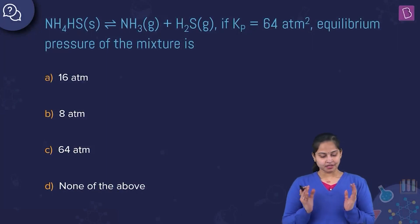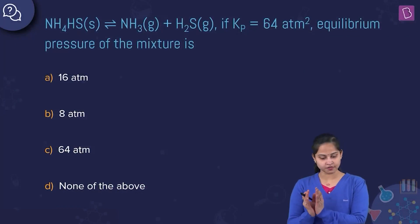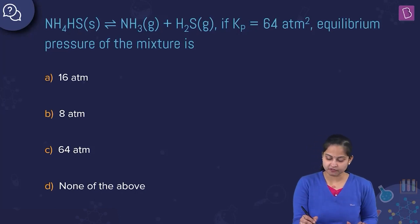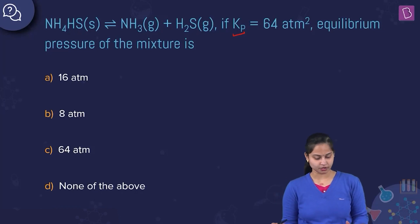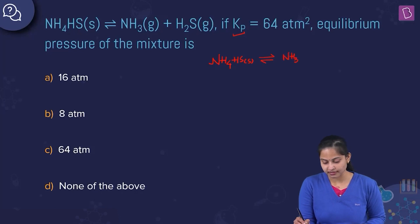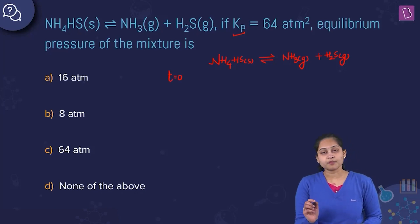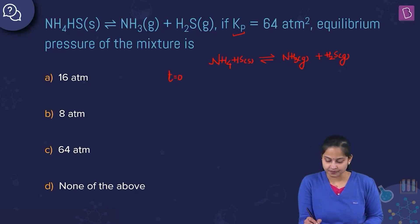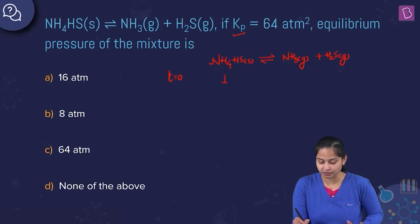The next question: NH4HS in the solid state is in equilibrium with NH3 (gaseous) plus H2S (gaseous). If Kp equals 64 ATM squared, what is the equilibrium pressure of the mixture? At time T=0, let moles of NH4HS be 1, and moles of NH3 and H2S be 0 and 0.